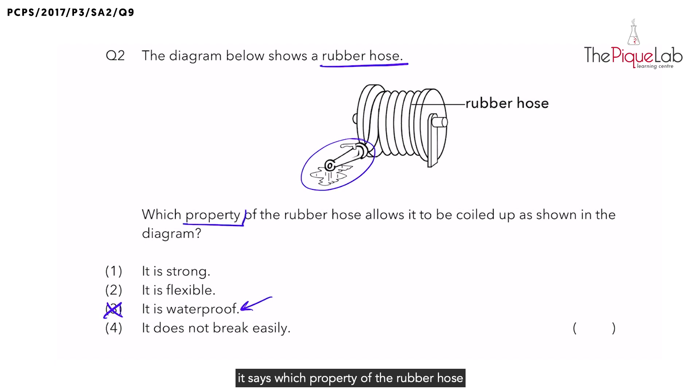It says which property of the rubber hose allows it to be coiled up as shown in the diagram. In order for the rubber hose to be coiled up, the material cannot be stiff. It has to be flexible.